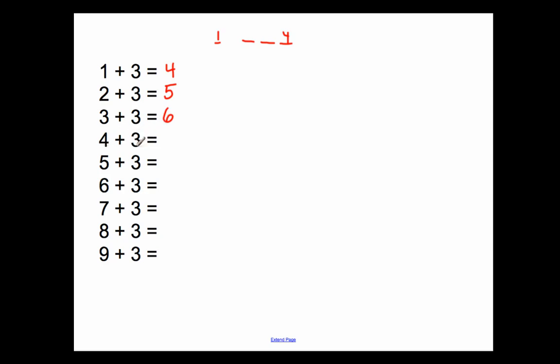4 plus 3 is solved by starting at 4 and counting on three more numbers. So you'd say 4, 5, 6, 7. 5 plus 3 is the same as 5, 6, 7, 8. So 5 plus 3 equals 8. And the number that you end up on is the answer. 6 plus 3: 6, 7, 8, 9. 6 plus 3 equals 9.